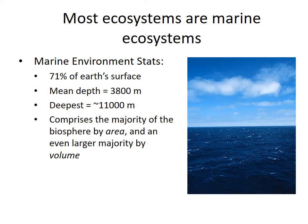Most ecosystems are marine because oceans cover 71% of the earth's surface. On average the ocean is 3,800 meters deep, and the deepest point exceeds 11,000 meters. Not only is there enormous surface area, but the water column from the surface all the way to the bottom is full of life. So if you quantify ecosystems not just by surface area but also by volume, the ocean vastly exceeds all other ecosystems on Earth.